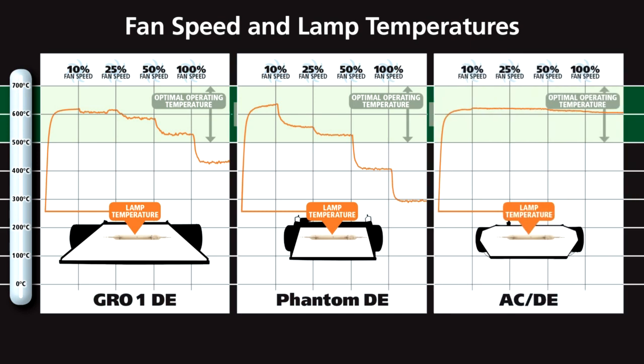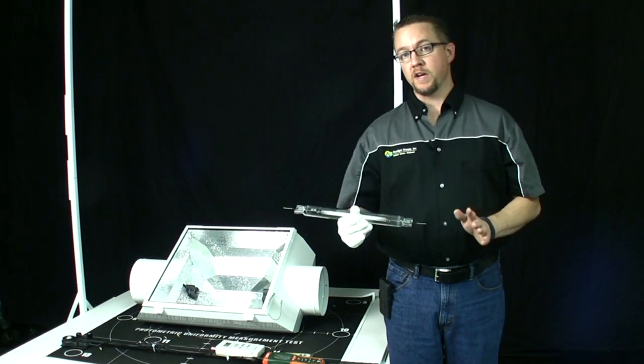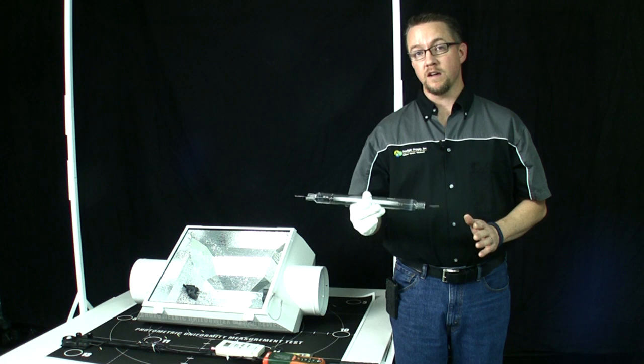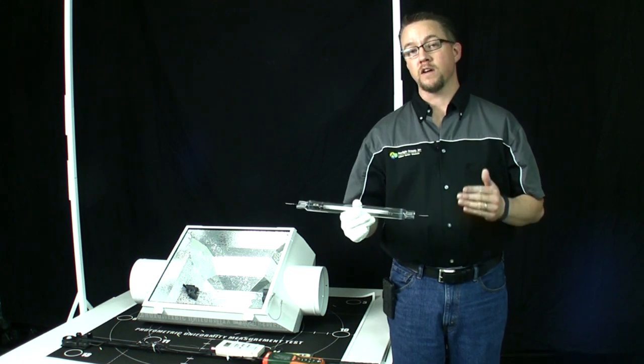Running your fan at 10%, effectively reducing the amount of airflow, will absolutely increase the radiated heat in your growing environment. A significantly cooler burning lamp will alter the intended color spectrum, which has a direct effect on your PAR levels.